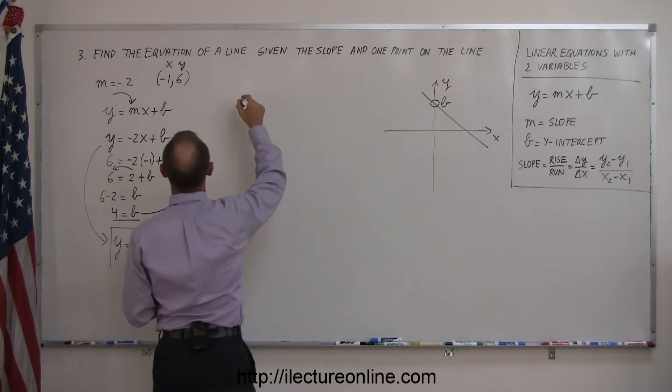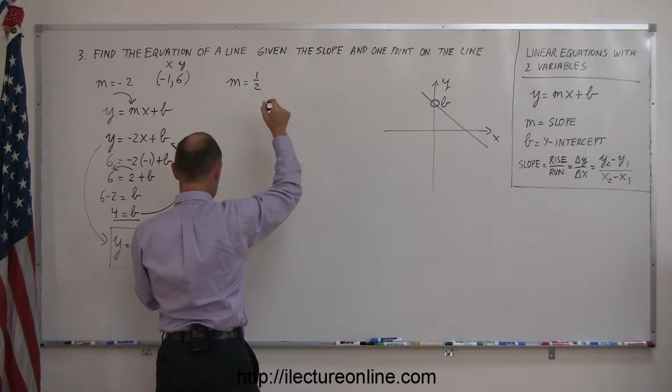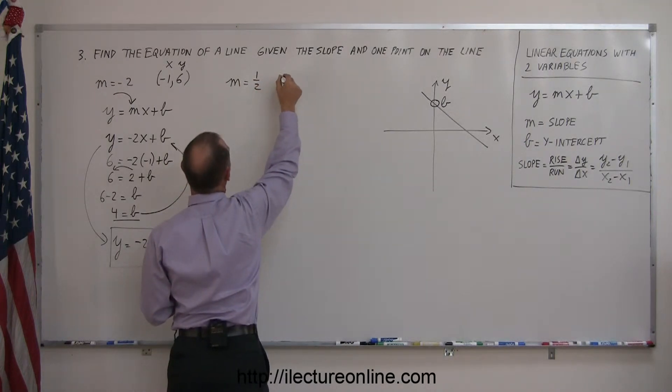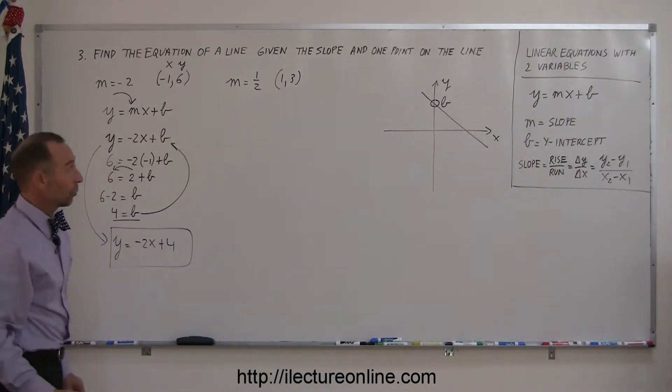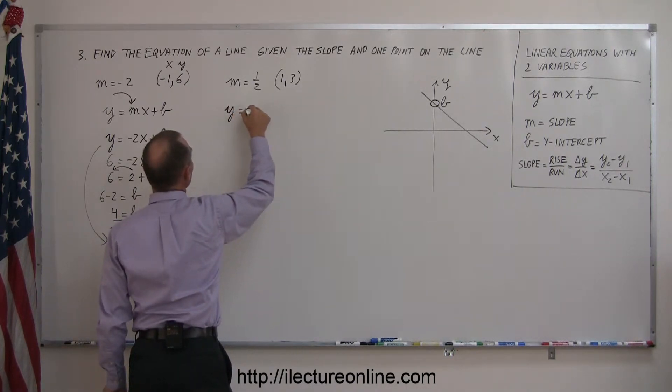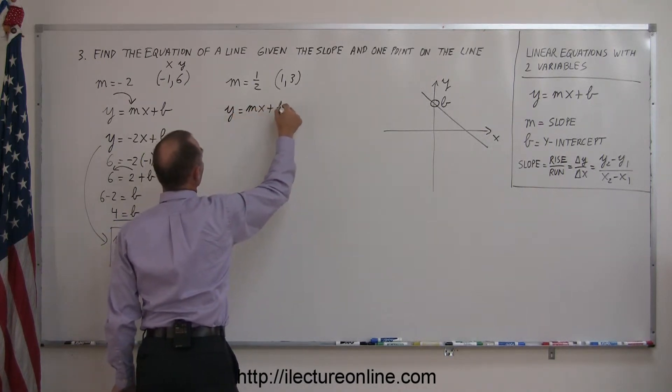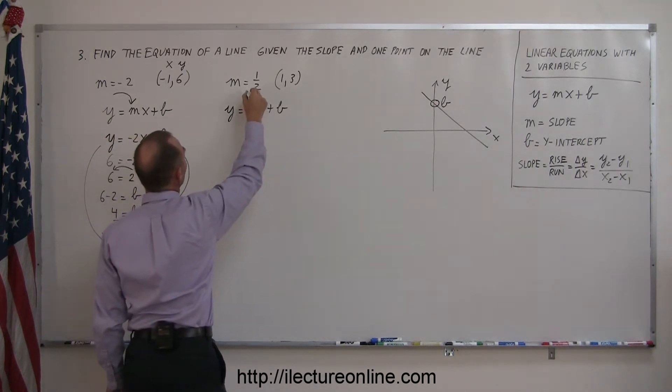Let's say I have another equation to look for, where the slope is equal to 1 half, and the point on the line is 1, 3. Again, start with the general equation, y equals mx plus b, write that down. Then you realize they already gave me the slope, I can simply plug that in for m, so now we have y equals 1 half x plus b.